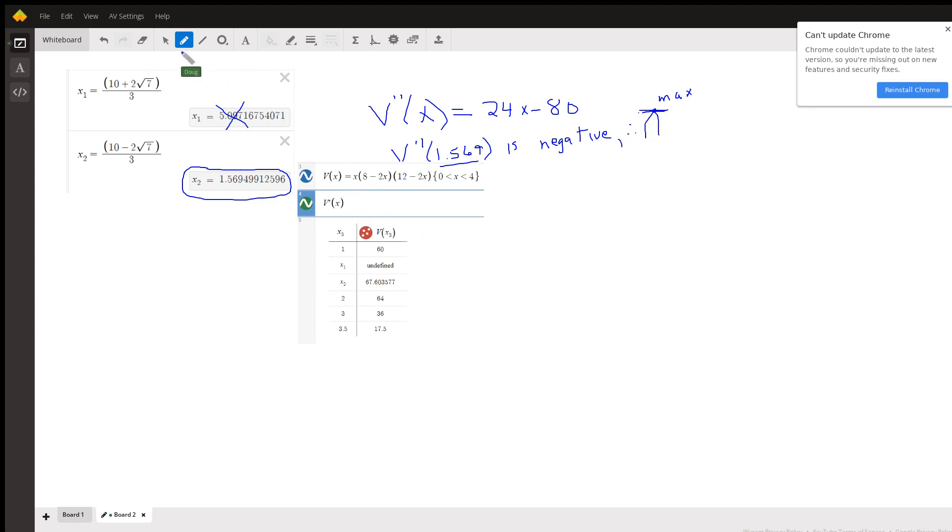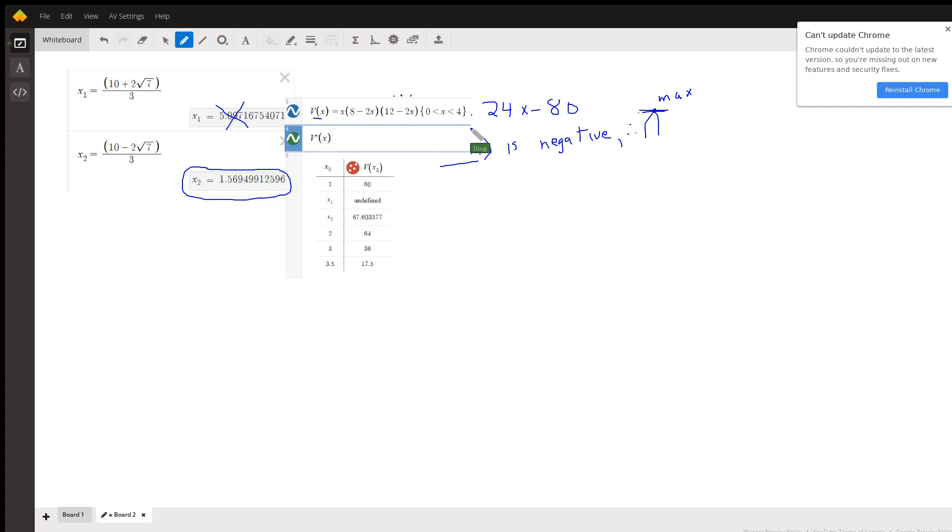Here is a table with some possible values for X where volume depends on X. You can see that X sub 2, which is this value right here, generates this volume, and that seems to be larger than any of these other numbers.